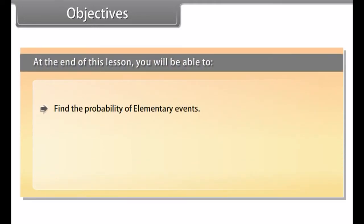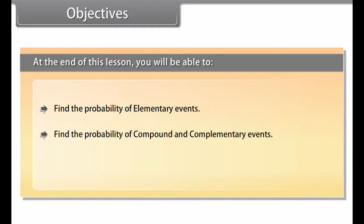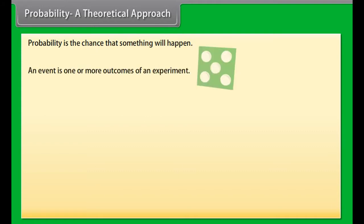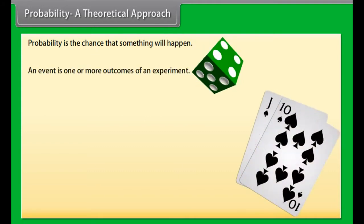Objectives. At the end of this lesson, you'll be able to: find the probability of elementary events, find the probability of compound and complementary events, and find the probability of impossible and sure events.